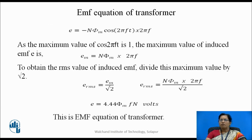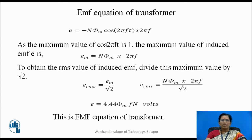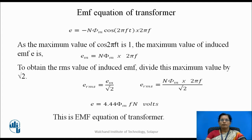After finding the derivative of this equation, we get E = −N φ_M cos(2πft) · 2πf. As the maximum value of cos(2πft) is 1, the maximum value of induced EMF is given by E_M = N φ_M · 2πf. To obtain the RMS value of induced EMF, divide this maximum value by √2.